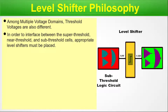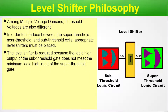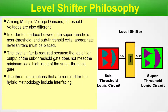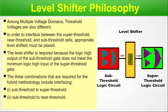Here is the level shifter diagram. This is the sub-threshold logic circuit, and this is the super-threshold logic circuit. In between, we have our level shifter. The voltages 0.4V and 1.12V, with reference to which the signal propagates, are also marked in the diagram. The level shifter is required because the logic high output of the sub-threshold gate does not meet the minimum logic high input of the super-threshold gate. The three combinations required for hybrid methodology include interfacing of sub-threshold to super-threshold, sub-threshold to near-threshold, and near-threshold to super-threshold.